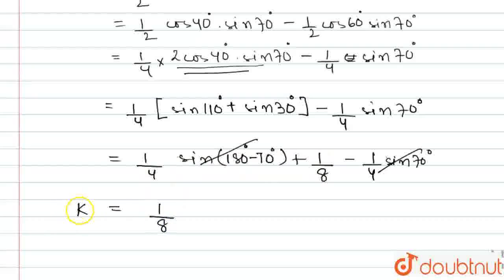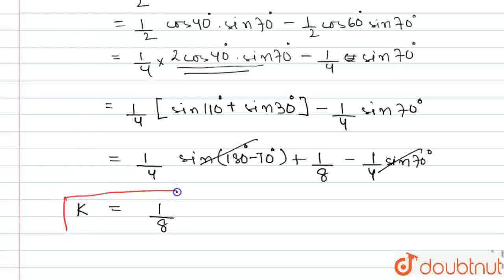So the value of K, that is the product sin(5π/18) · sin(5π/18) · sin(7π/18), is equal to 1/8. I hope this has answered your question and your doubt is clear. Thank you.